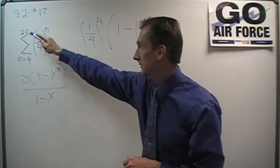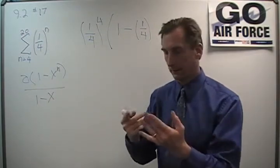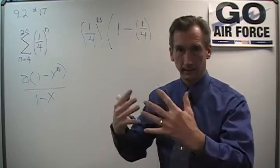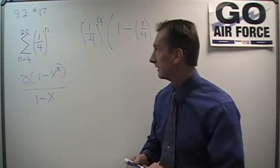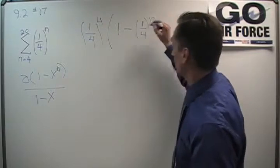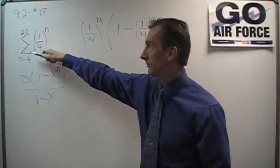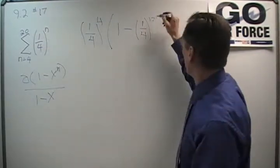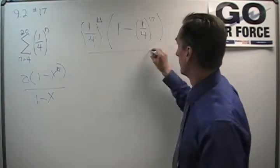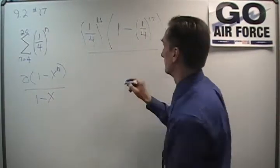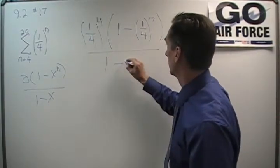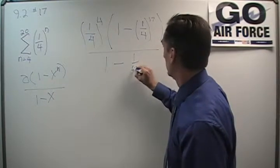Well, let's count them. Well, we're starting at 4 and going to 20. I don't have that many fingers, but if I did, you'd see I'd be holding up 17 fingers as I counted through those. So, it is to the 17th because I have 17 terms from 4 to 20. And all of this over 1 minus x, which is 1 minus 1 fourth.